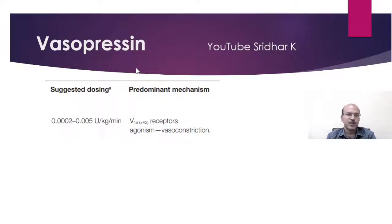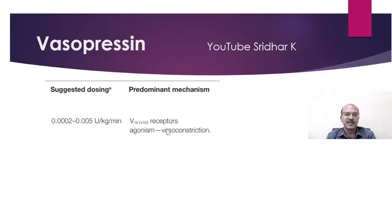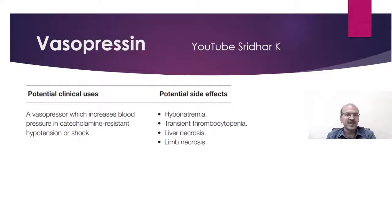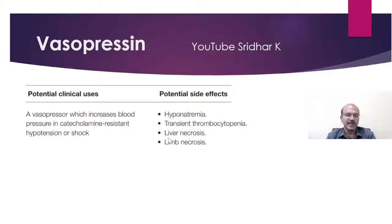Vasopressin is a backup and most of us have not used it. The dose range is very small: 0.0002 to 0.005 units/kg/min. Vasopressin 1A receptor agonism leads to vasoconstriction, including potent hepatic circulation vasoconstriction. It improves blood pressure in catecholamine-resistant hypotension or shock — if a baby has reached that stage, most probably we are in a very difficult situation. Side effects include hyponatremia, transient thrombocytopenia, liver necrosis, and severe vasoconstriction-related limb necrosis.